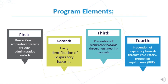To ensure the effective implementation of the Respiratory Protection Program, it is significant to implement through the program elements: first, prevention of respiratory hazards through administrative controls; second, early identification of respiratory hazards; third, prevention of respiratory hazards through engineering controls; fourth, prevention of respiratory hazards through respiratory protection equipment. Implementing all four elements ensures that respiratory exposure to infectious respiratory illnesses will be minimized.